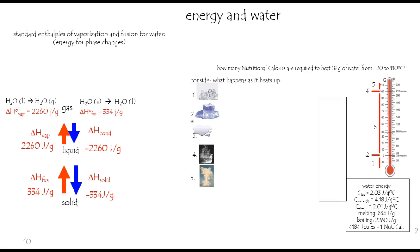So we've got five steps. Whenever you have a temperature change, we'll use Q equals MC delta T. Whenever we have a phase change, we'll use the enthalpy of fusion, vaporization, et cetera.